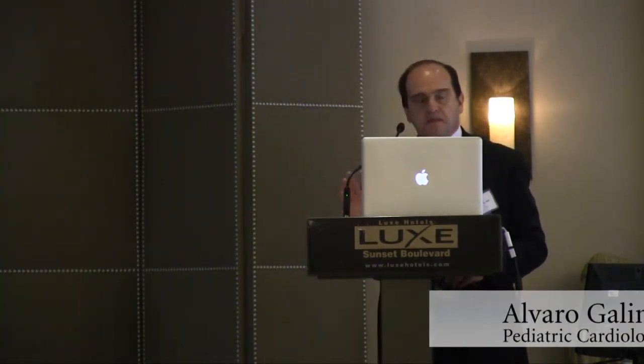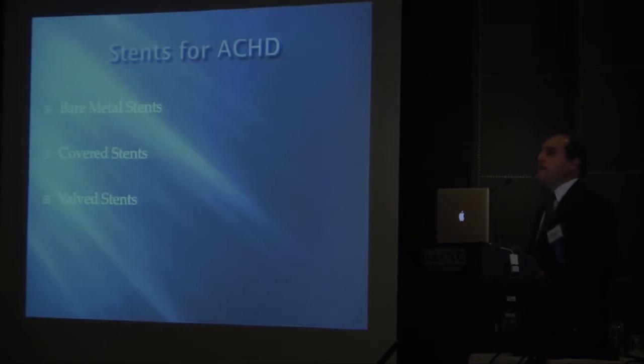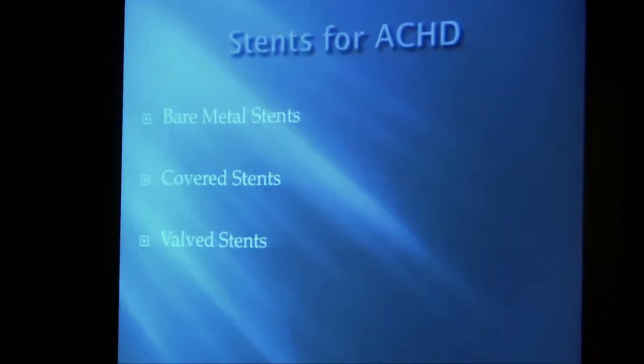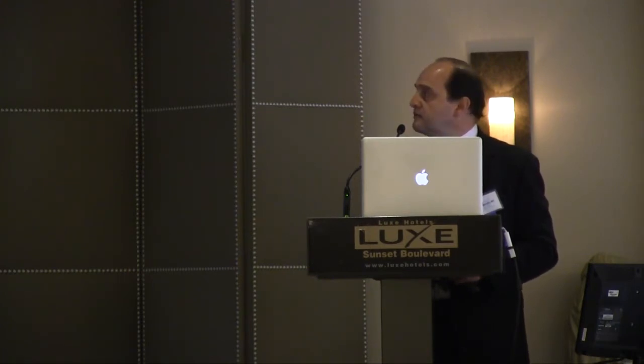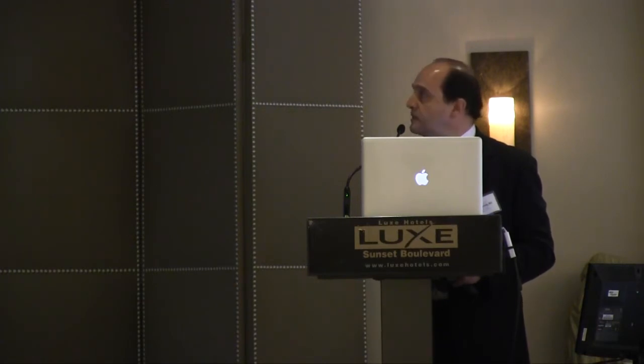This talk is really about stents and their various applications in adult congenital heart defects. I'm going to talk about bare metal stents, covered stents, and mention valve stents briefly — that's the topic of the next talk. Bare metal stents are what we've had since the 90s. They are either balloon expandable or self-expanding, come in a wide range of diameters and lengths, and are excellent for relieving obstructions or stenosis or to establish or maintain openings.